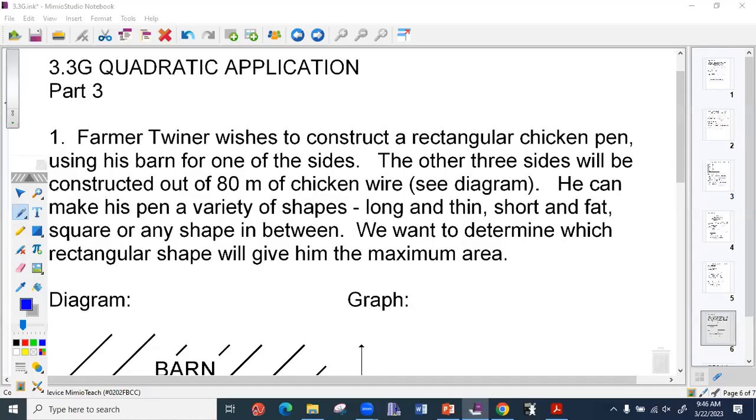For part three, we're only going to do example one. Farmer Twiner wishes to construct a rectangular chicken pen using his barn for one of the sides. The other three sides will be constructed out of 80 meters of chicken wire. He can make this pen a variety of shapes, long and thin, short and fat, square, or any shape in between.